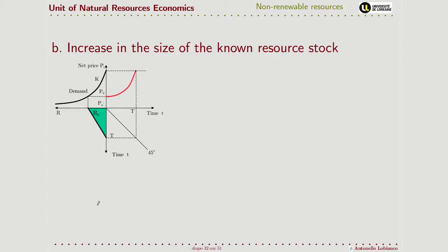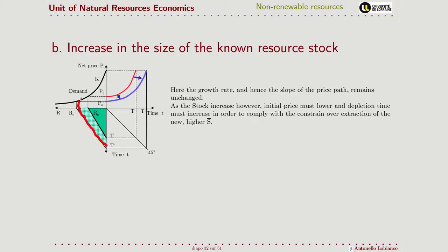The second case is an increase in the size of the resource stock. This again is our original solution. Because we have a higher stock that we still have to fully consume, we must start from a level of price that is lower than before, and it must remain always lower than before, in order to allow consumption of this extra stock of the resource.